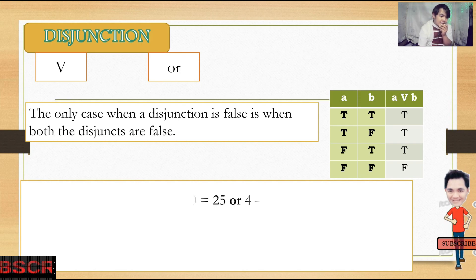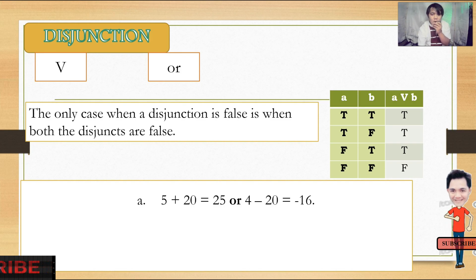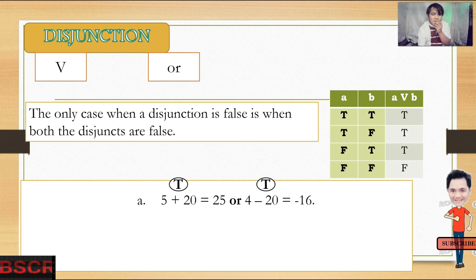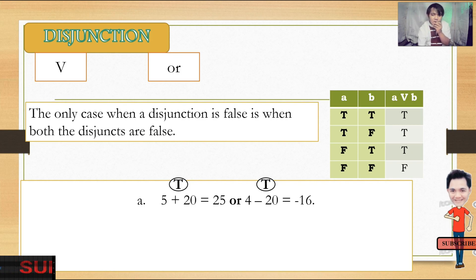Example: '5 plus 20 is equal to 25 or 4 minus 20 is equal to 16.' The first disjunct is true and the second is true, so that is a true statement.